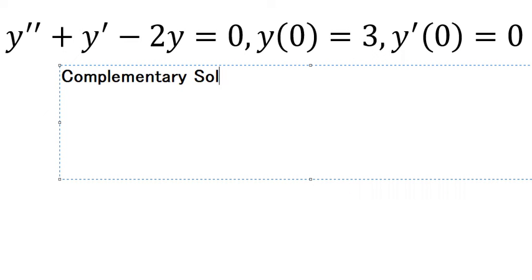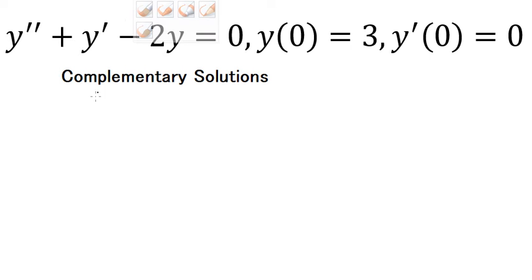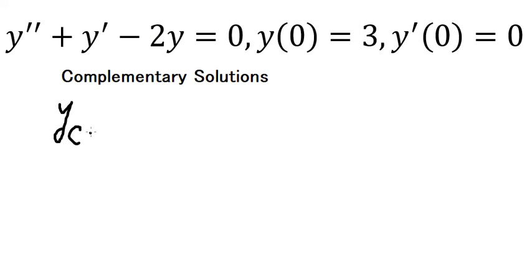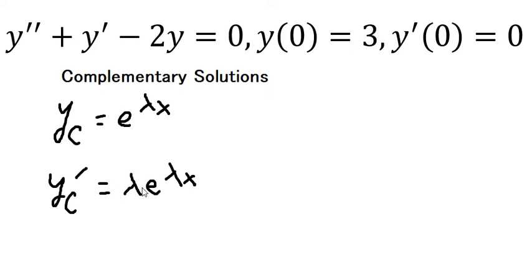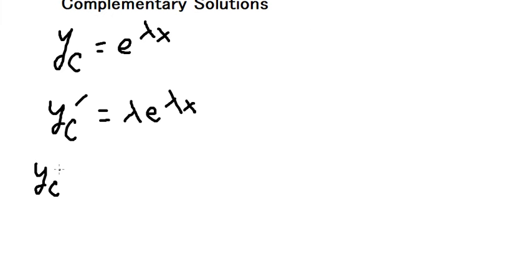I will set yc equal to e to the power of λx. If we take the first derivative, we get λ times e to the power of λx — we keep the base and differentiate λx to get λ. Next, the second derivative gives us λ² times e to the power of λx.